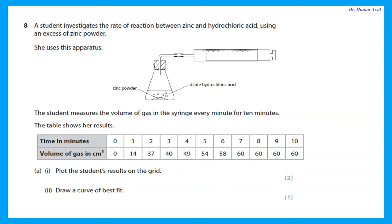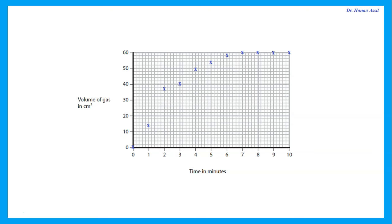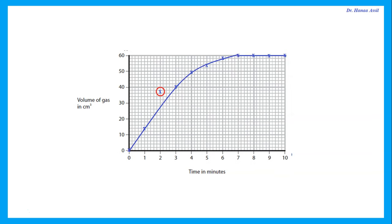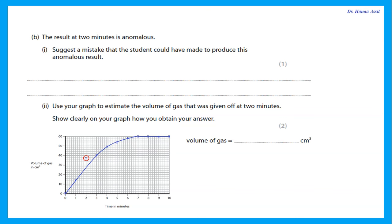Question 8: A student investigates the rate of reaction between zinc and hydrochloric acid using an excess of zinc powder. The student measures the volume of gas in the syringe every minute for 10 minutes. Plot the results and draw a curve of best fit. Plotting means using small crosses or dots with circles, then joining them so that any anomalous point is not included in the curve. The result at two minutes is anomalous — don't include it in the curve.